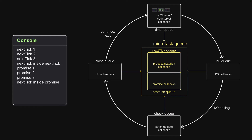We have three callbacks in the timer queue and each of them are dequeued and executed on the call stack one by one, printing setTimeout 1, 2, and 3. So far the order of priority is: next tick queue, then the promise queue, and then the timer queue. Let's now proceed to experiment number four.